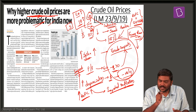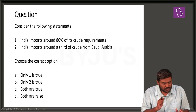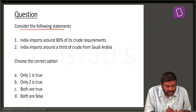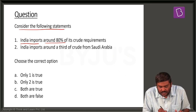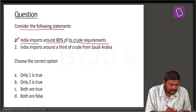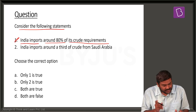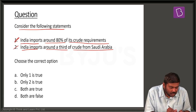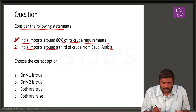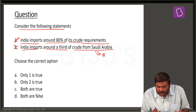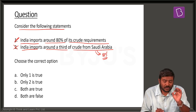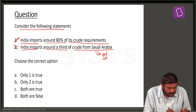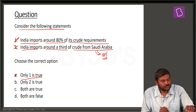Based on this, let us solve certain questions. First question: consider the following statements — India imports around 80% of its crude requirements (yes, correct); India imports around a third of crude from Saudi Arabia (wrong — as of now, the import from Saudi Arabia is around 18%). So the right option will be option A: only statement one is true.